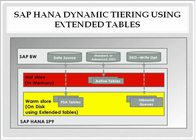In SAP BW, warm data which is used in the acquisition area and corporate memory area is usually saved in data store objects, PSA tables, and in write-optimized DSOs. If you use SAP HANA Dynamic Tiering, you can configure these objects to make SAP HANA create an extended table instead of a native SAP HANA table.